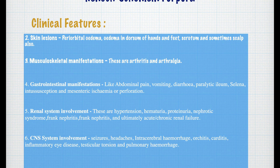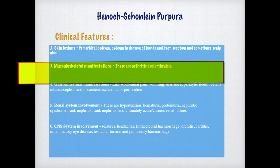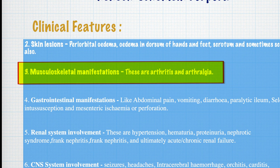Other clinical features: number 2 is skin lesions in which we can see periorbital edema, edema in dorsum of hands and feet, scrotum, and sometimes scalp also. Musculoskeletal manifestations include arthritis and arthralgia.